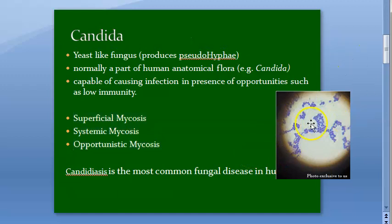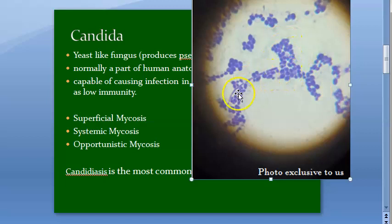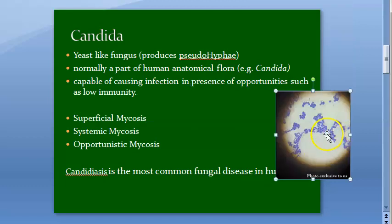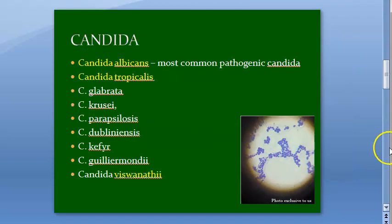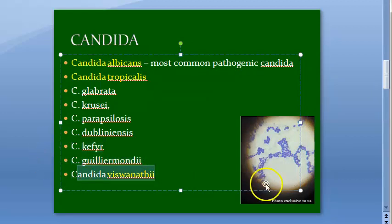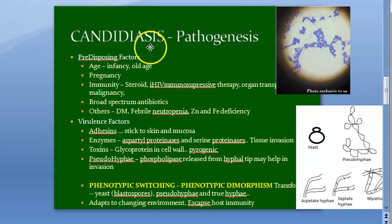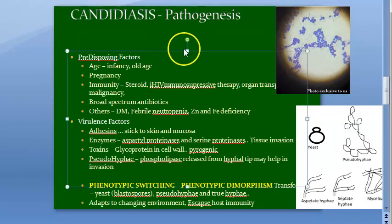This is a photo of Candida showing pseudo hyphae — it is yeast-like and budding, but the buds are not separated; they are continuous. The important Candida species to know are Candida albicans, the main one, then Candida tropicalis, and others like Candida krusei and Candida wishwanathi.